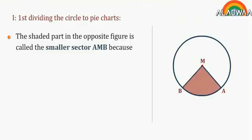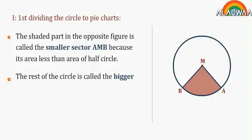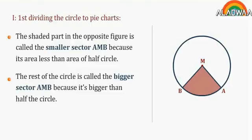Because its area is less than the area of half the circle. The rest of the circle is called the bigger sector AMB, because it's bigger than half the circle.